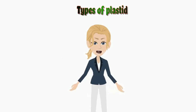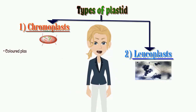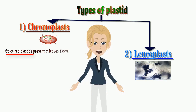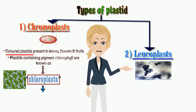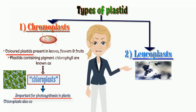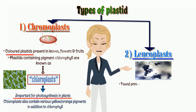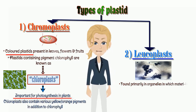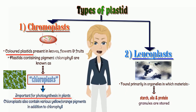There are two types of plastids: chromoplasts and leucoplasts. Chromoplasts are the colored plastids present in leaves, flowers, and fruits. Plastids containing the pigment chlorophyll are known as chloroplasts. They are important for photosynthesis in plants. Chloroplasts also contain various yellow or orange pigments in addition to chlorophyll. Leucoplasts are found primarily in organelles in which materials such as starch, oils, and protein granules are stored.